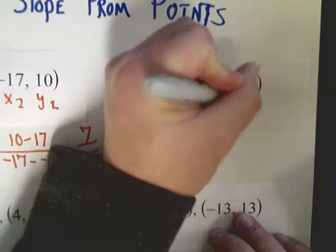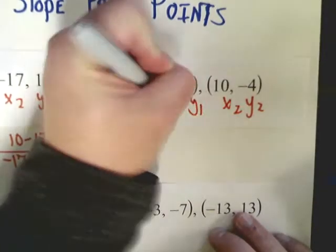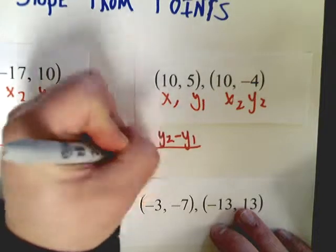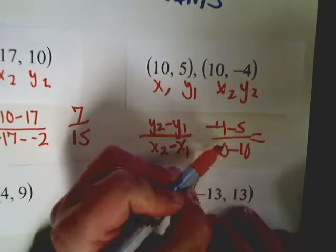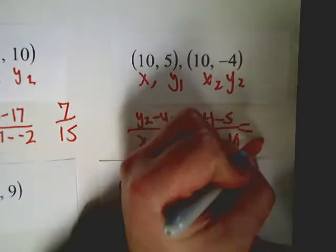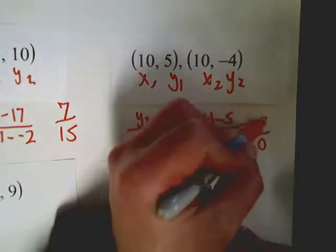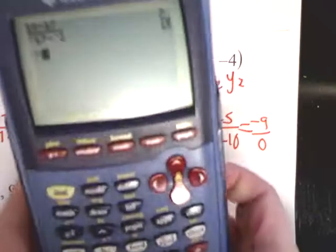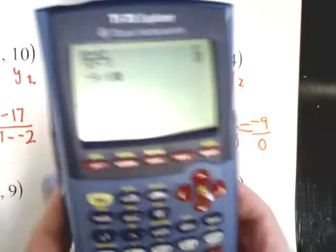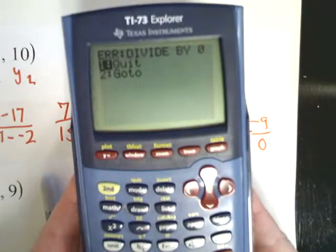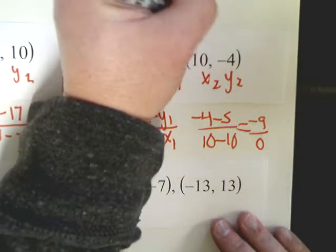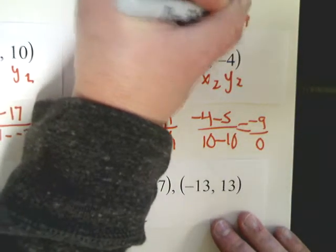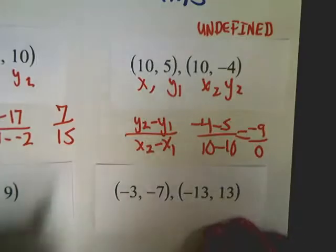For this one, x, y, x, y. This is the second time I wrote it. This is the first time. You might want to write your formula down again. Negative 4 minus 5 over 10 minus 10. Now, in this situation, the bottom part is going to end up giving you 0. And if I do negative 9 divided by 0, undefined because it says you can't divide by 0. So, my answer for this one is undefined. Can't have that.